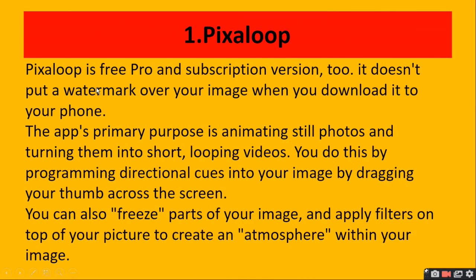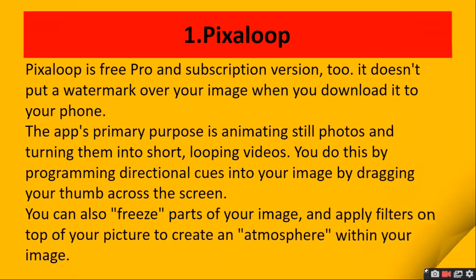Pixel Loop is available in a free, pro, and subscription version. The app's primary purpose is animating still photos and turning them into short videos. You do this by programming directional cues into your image by dragging your thumb across the screen. You can also freeze a part of an image. This is a very good and free app.